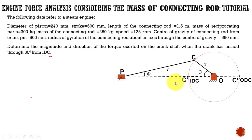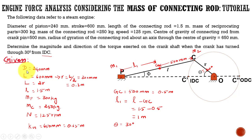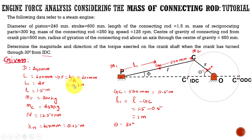Now let us write down the given data. The diameter of the piston is 240 mm. Stroke length L is equal to 600 mm. From that we can find out the radius of the crank, because the stroke length is twice that of the radius of the crank. So the radius of the crank is L divided by 2, which equals 300 mm, or 0.3 meter. The length of the connecting rod is 1.5 meter, and mass of the piston is 300 kg.